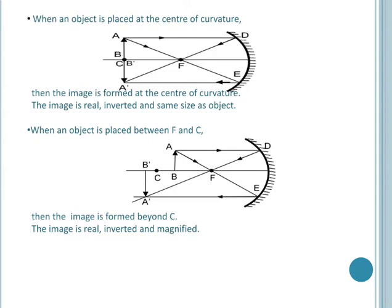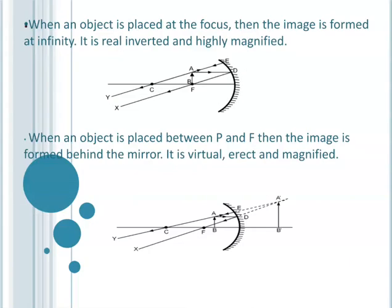Third position: when the object is placed at center of curvature C, the image formed is real, inverted, and the same size as the object. Fourth position: when the object is placed between focus F and center of curvature C, the image is formed beyond the center of curvature, and the nature of this image is real, inverted, and magnified.